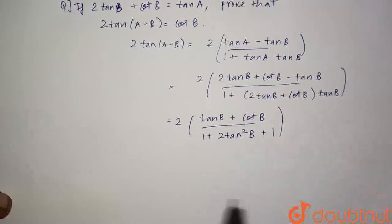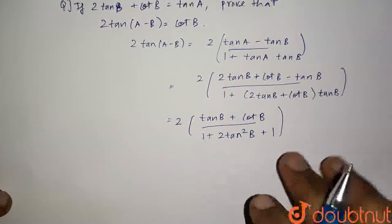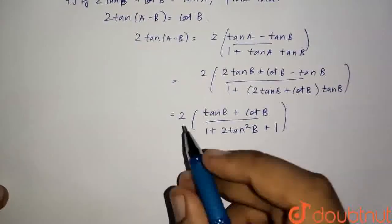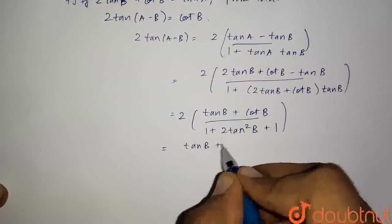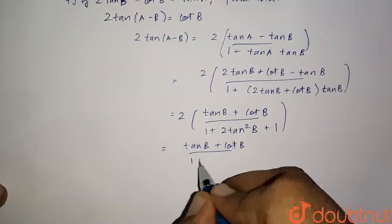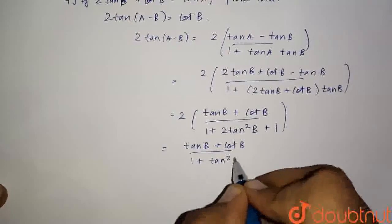In the denominator, we will have 2 plus 2 tan square b. We will take 2 common and these 2 will be cancelled. We will be left with tan b plus cot b whole upon 1 plus tan square b.